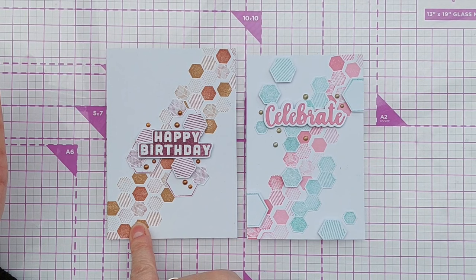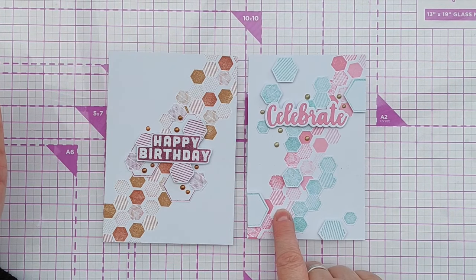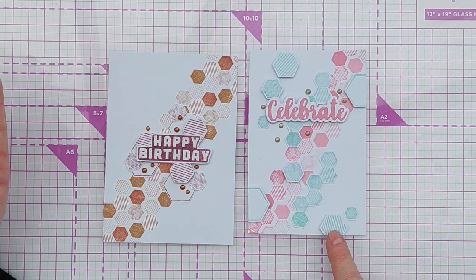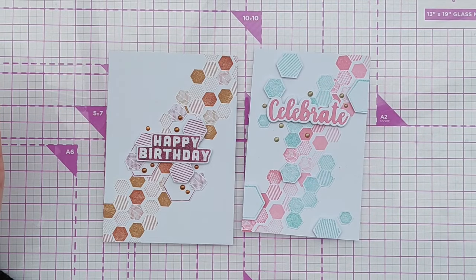This one I used Ranger Archival Inks. This one the pinks were Catherine Pooler and I used some homemade embossing powders to create these green accents.